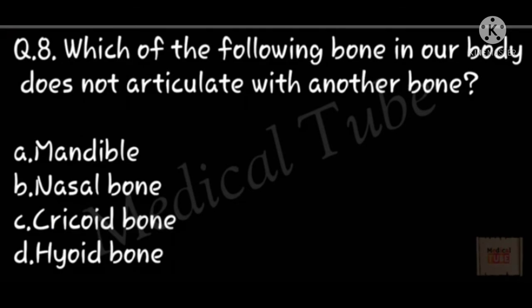Eight number question: which of the following bones in our body does not articulate with another bone? Correct answer is D, hyoid bone.